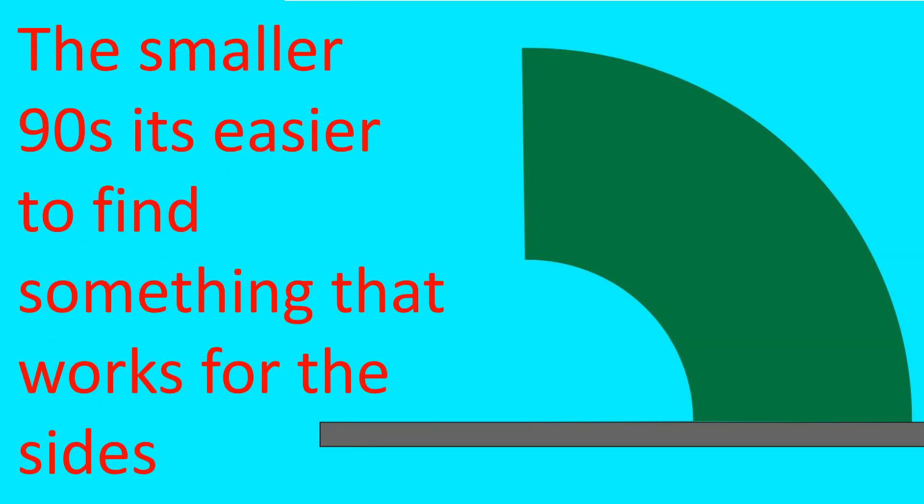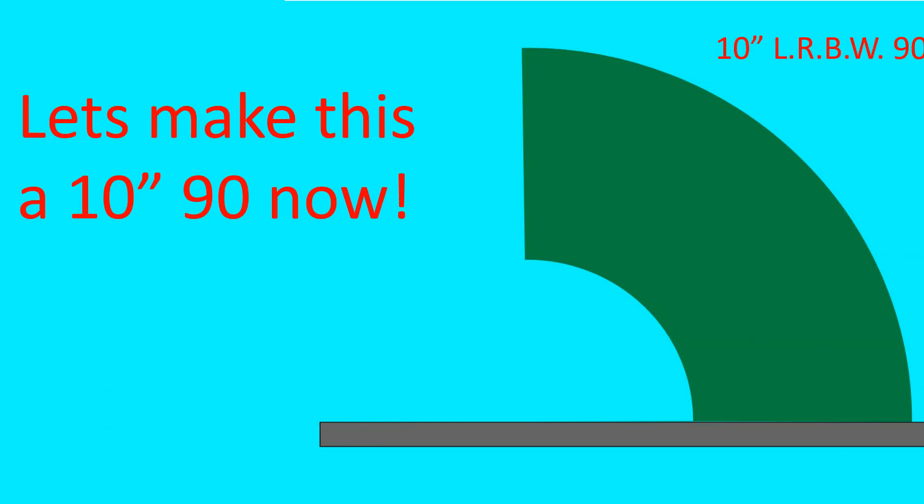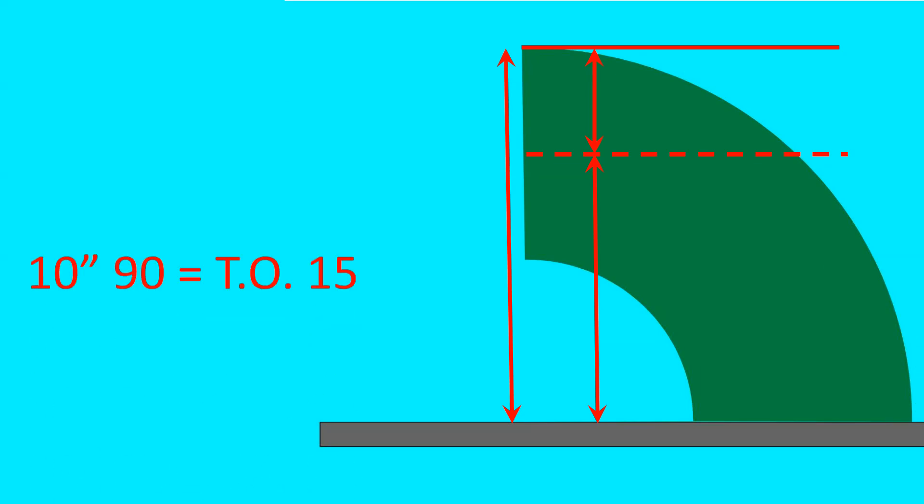The smaller 90s, it's easier to find something that works for the sides. Let's make this a 10 inch 90 now. 10 inch long radius, butt weld 90. 10 inch 90 equals 15. The OD is 10 and 3 quarters.